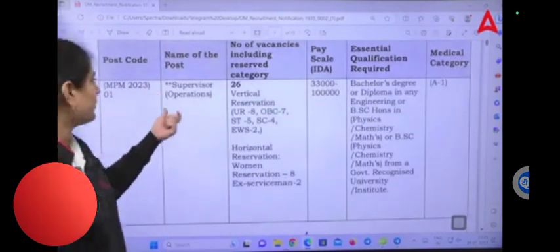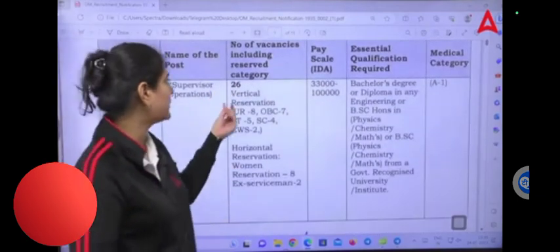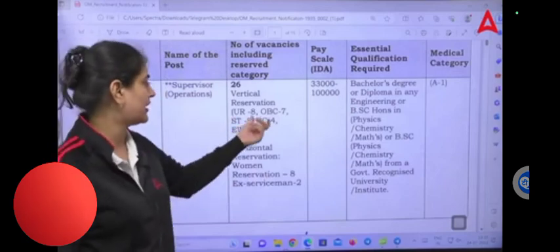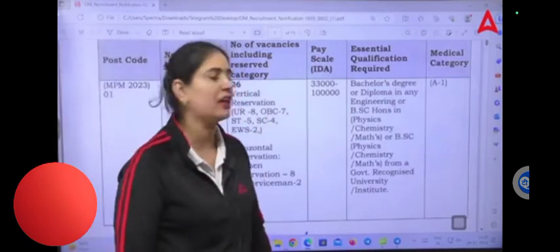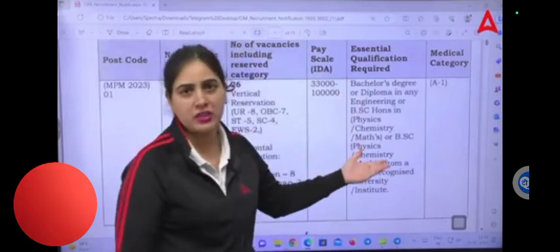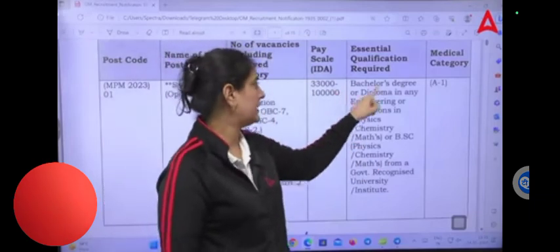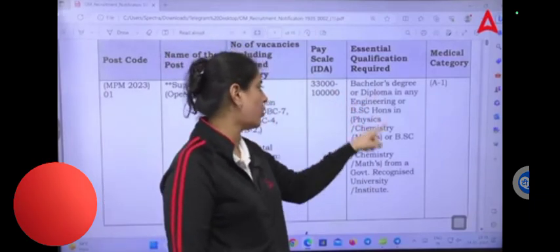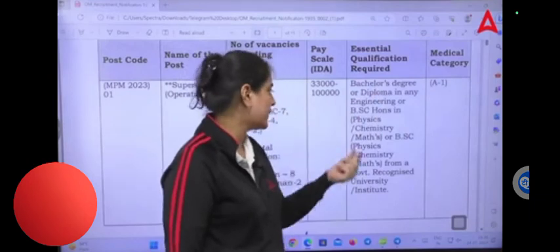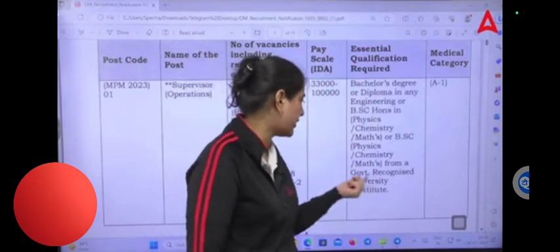You can see the post code. You have Supervisor in Operations with 26 posts in general category. Salary is 33,000. What is your qualification? If you have a bachelor degree or diploma in any engineering, or BSc in physics, chemistry or maths, BSc physics, chemistry, maths from a government-recognized university.